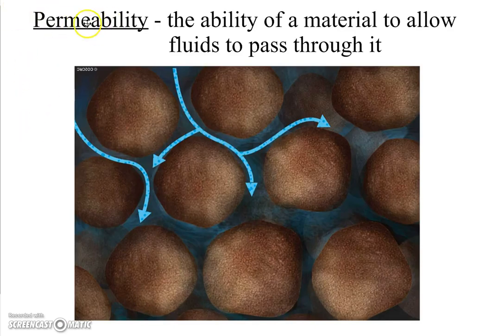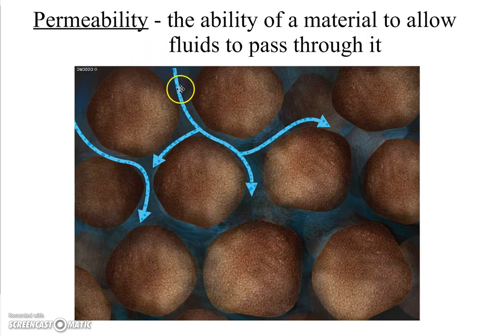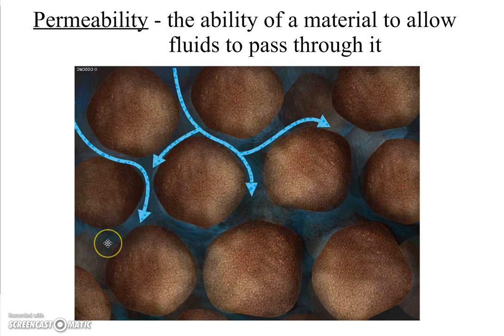Permeability — if you look at the word, you'll notice that it ends in the word 'ability.' Permeability is just the ability of a fluid — and usually we're talking about water from precipitation — so it's the ability for water to get through a material. You can see in this picture there is some blue, let's say it's rainwater or water from melting snow, and it is permeating, moving through the materials.